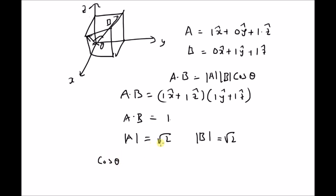Therefore, cos theta from this equation is a dot b divided by modulus of a times modulus of b, which equals 1 by square root of 2 times square root of 2, which is 1 by 2.